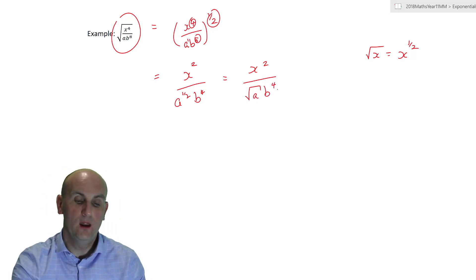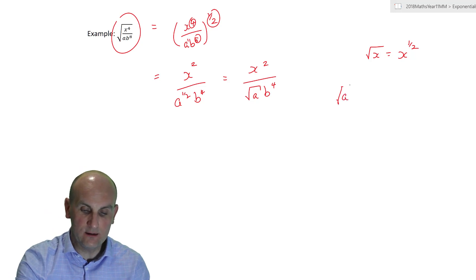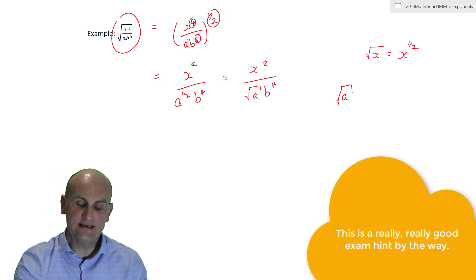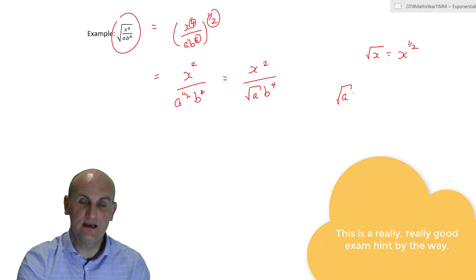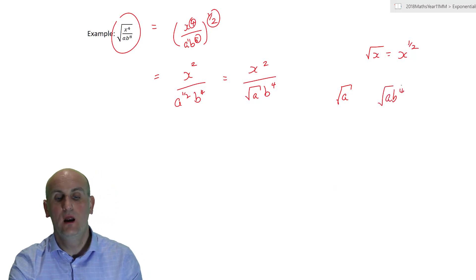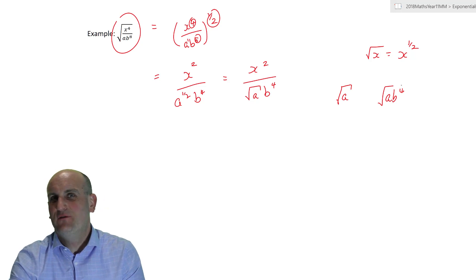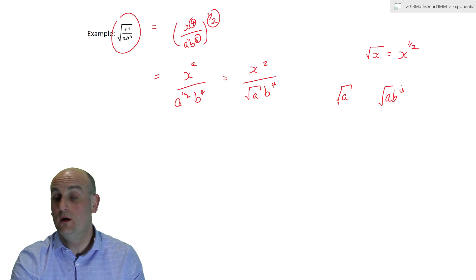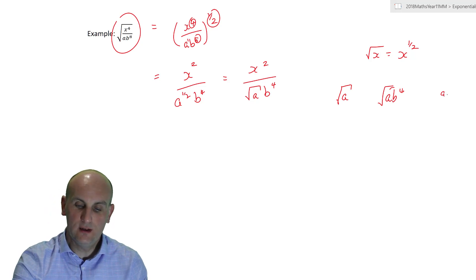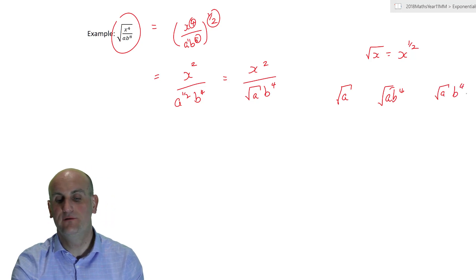Two important final points. First, about notation: in exams, examiners get really upset about bad square root notation. Always make sure the square root sign clearly covers the letter it belongs to. If you write a messy root sign, the examiner may not know whether it ends on the a or extends to the b. Always write your letter, then your square root sign, then b to the power of four clearly.